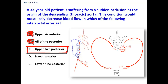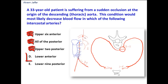The upper two posterior intercostal arteries, as we have just mentioned, are not supplied by the descending thoracic aorta — they are supplied by the superior intercostal branch of the costocervical trunk.